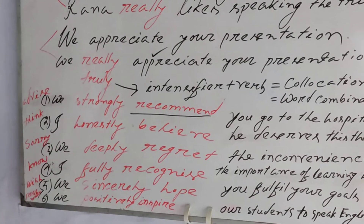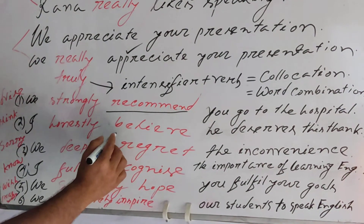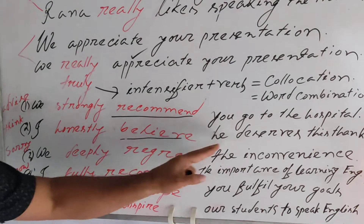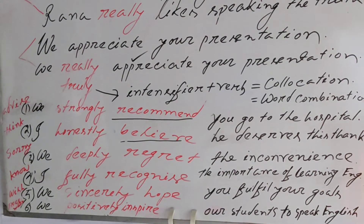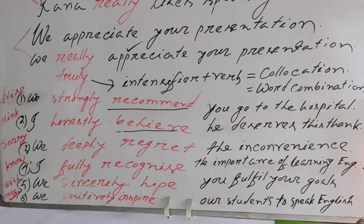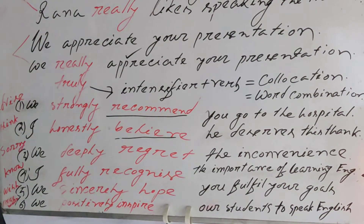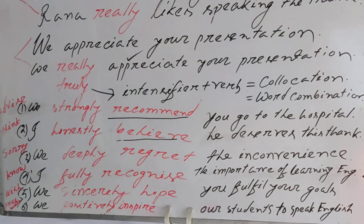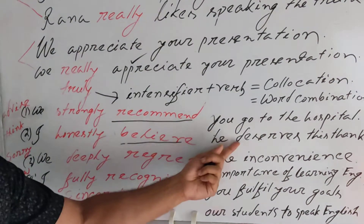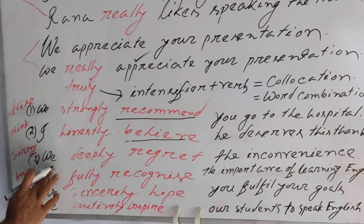The next example is about expressing a belief or opinion: 'I honestly believe he deserves this thing.' Before the principal verb 'believe,' I have used the intensifier 'honestly.' If you have quality and skill in speaking, I can say 'I honestly believe my student deserves this' — because your presentation is smart, your pronunciation is amazing.